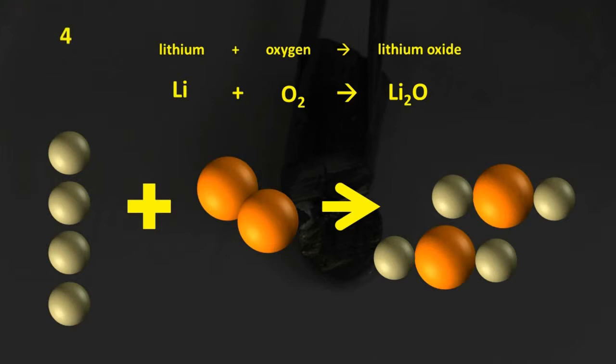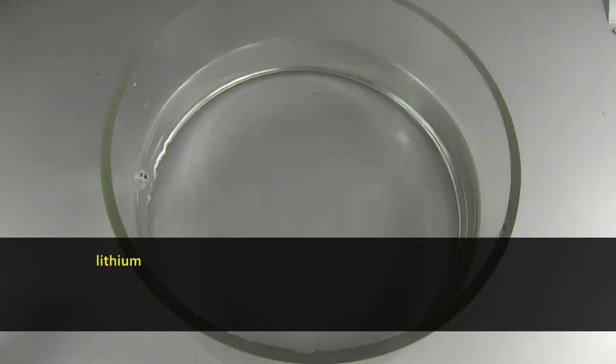The balanced equation is therefore, 4Li plus O2 produces 2Li2O. Lithium reacts readily with water. The equation for the reaction is, lithium plus water produces hydrogen, that's what's in the bubbles being produced, plus lithium hydroxide,